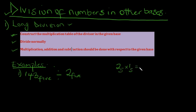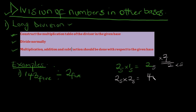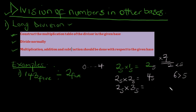2 base 5 multiplied by 1 base 5 equals 2, since 2 is less than 5. Moving to the next: 2 base 5 multiplied by 2 base 5 is 4 in base 5 — 4 is less than 5, so we write that. Then 2 base 5 multiplied by 3 base 5: that's 6. The highest digit in base 5 is 4, since digits go from 0 to 4. Since 6 is greater than 5, we find how many times 5 goes into 6 — that's 1 remainder 1 — so we write 11 in base 5.